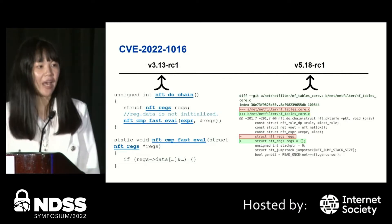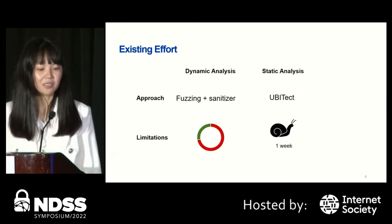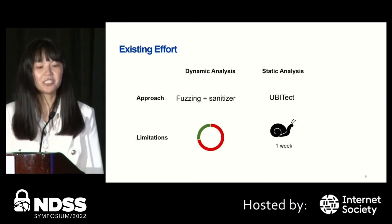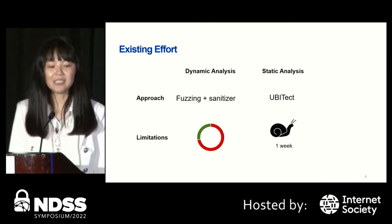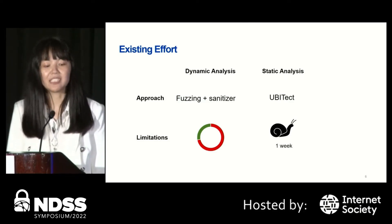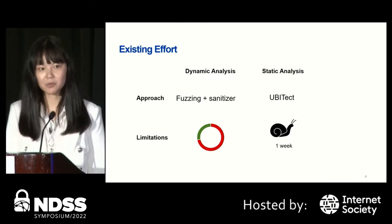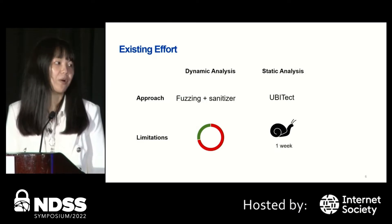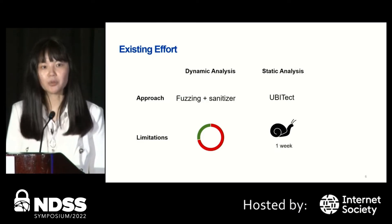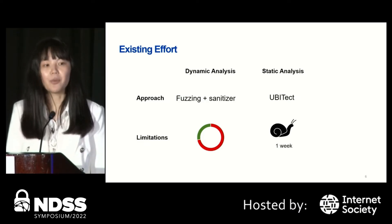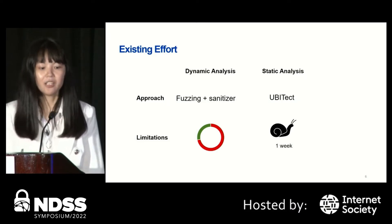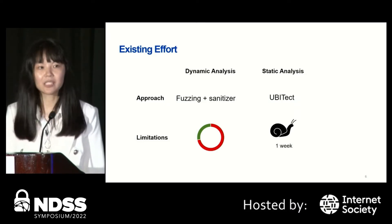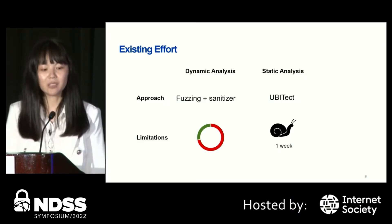Currently we have two options. The first is dynamic analysis, mainly fuzzing and some sanitizer approaches. This approach suffers from incomplete code coverage, so if the previous buggy commit is not exercised, then we cannot catch this bug efficiently.